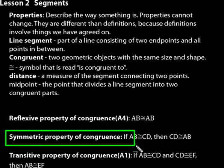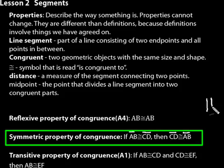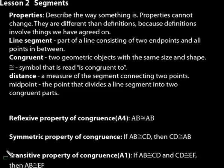Next we have the symmetric property of congruence. If you were looking at two segments, we could say if segment AB is congruent to CD, then it works the other way too — CD is congruent to AB. So for two congruent segments, it doesn't matter which one is first.